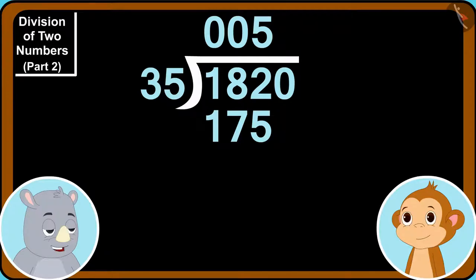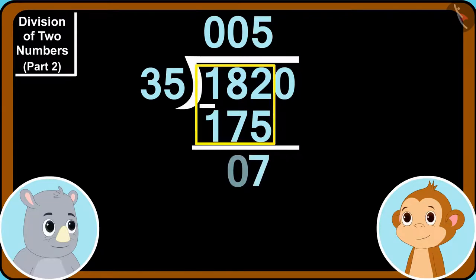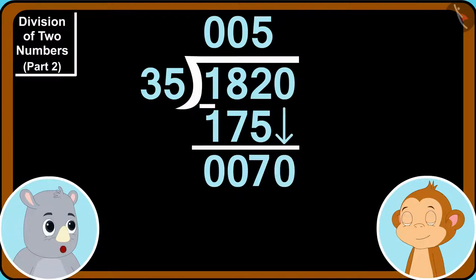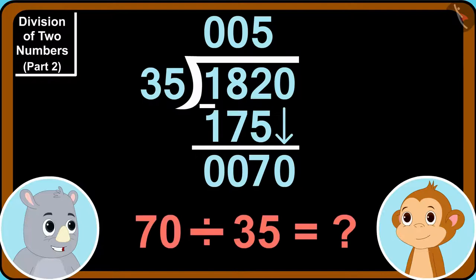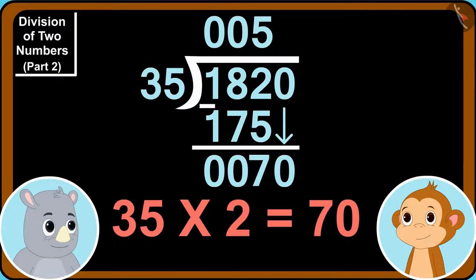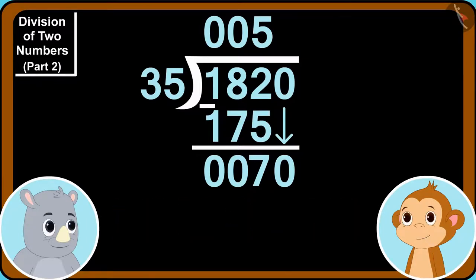Now, we will subtract 175 out of 182. Now, we will bring down 0 and write it next to the 7 at the bottom in this way. Now, at the end, tell me, Babban, can we divide 70 by 35? Absolutely, 35 times 2 is 70, Babban said to Gaggoo.